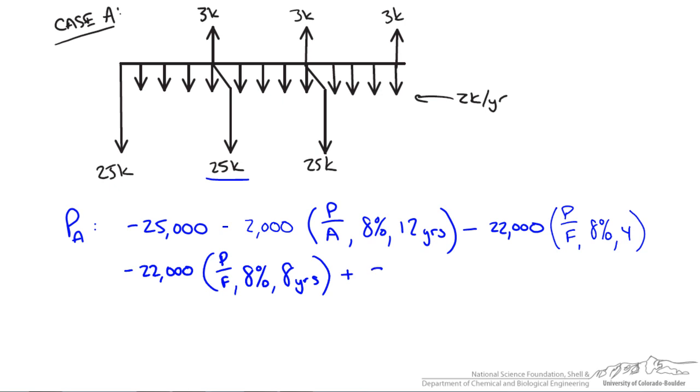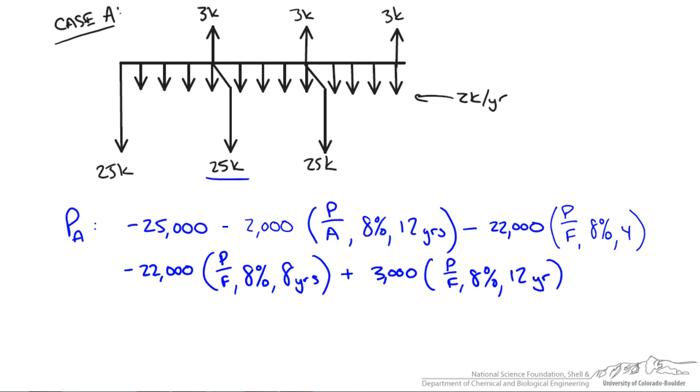And then lastly, we're adding 3,000 as a future value that we get from our salvage of the equipment, again 8%, and this is at year 12. So this is what our equation setup looks like. And now we're going to fill in the appropriate equations with these values.